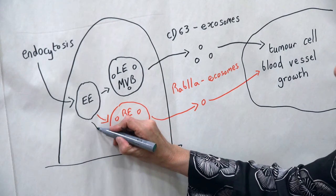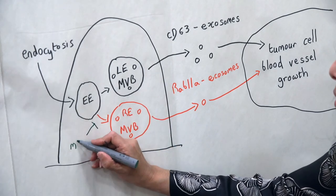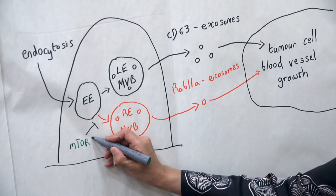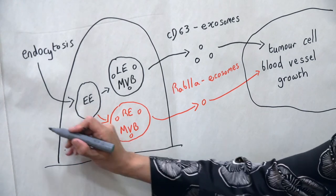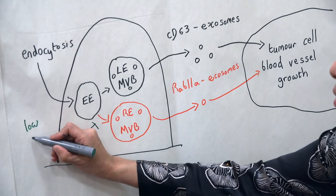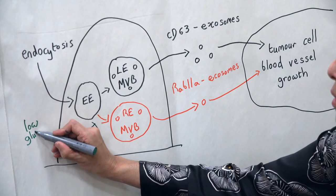In complementary work using human cancer cells, we found that the nutrient and microenvironmental sensing complex, mTORC1, controls the relative production of exosomes through the classic and alternate exosome-generating pathways.